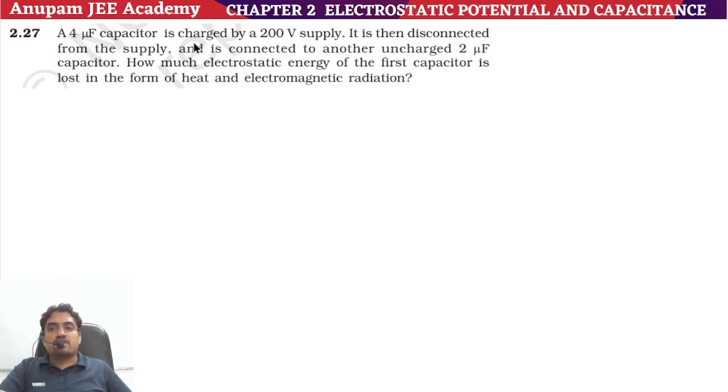A 4 microfarad capacitor is charged by 200 volt supply, disconnected from the supply and connected to another uncharged 2 microfarad capacitor. How much electrostatic energy of the first capacitor is lost in the form of heat and electromagnetic radiation?